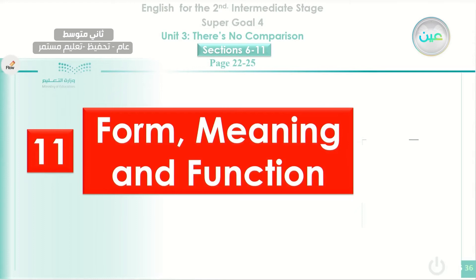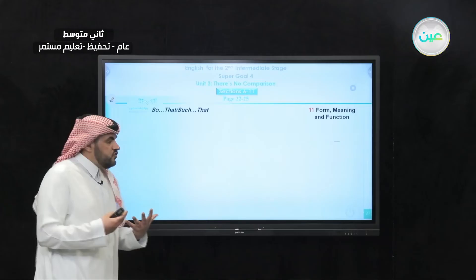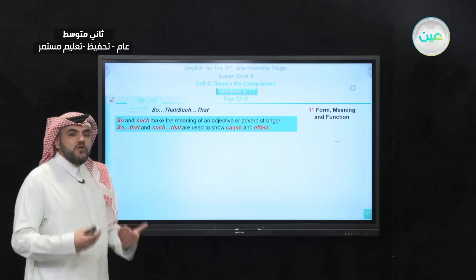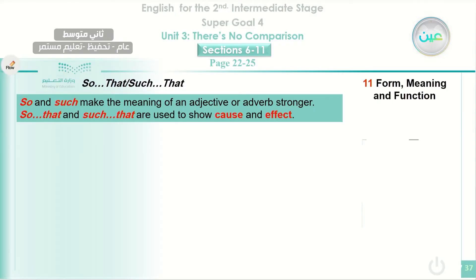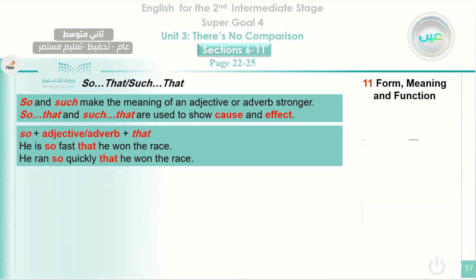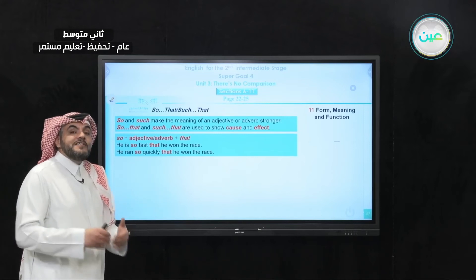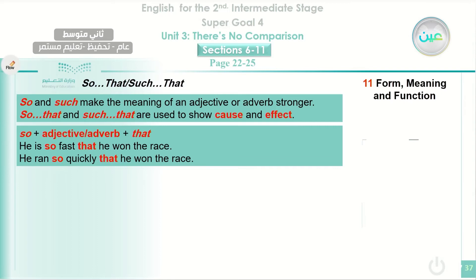We move to the last section — form, meaning and function. We are going to learn about 'so' and 'such.' 'So' and 'such' make the meaning of an adjective or adverb stronger. When used before an adjective or adverb, they intensify it. 'So + adjective/adverb + that' and 'such + noun + that' are used to show cause and effect. For example: 'He is so fast that he won the race' — so here is used as an intensifier modifying the adjective 'fast.' Also: 'He ran so quickly that he won the race' — here 'so' modifies the adverb 'quickly.'